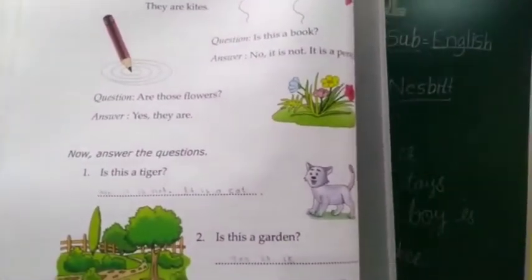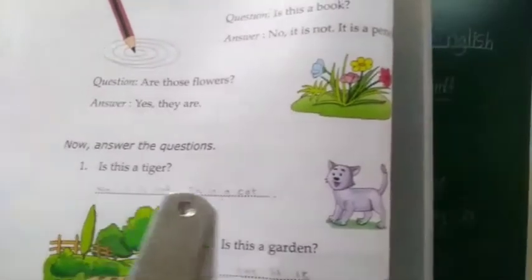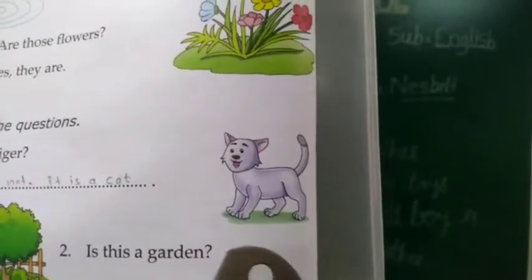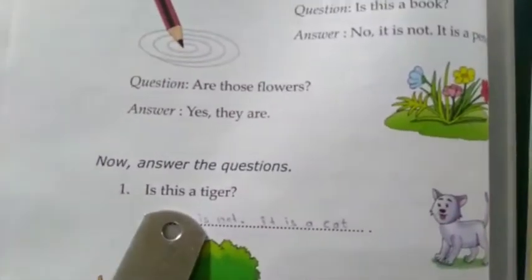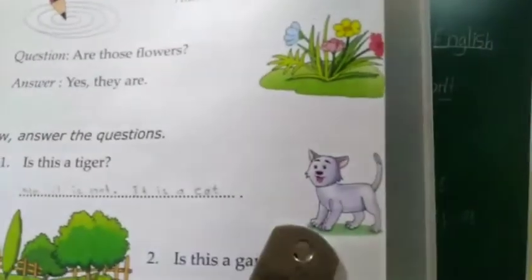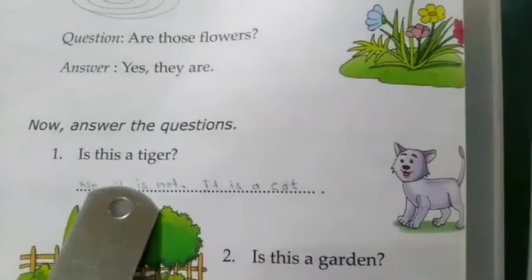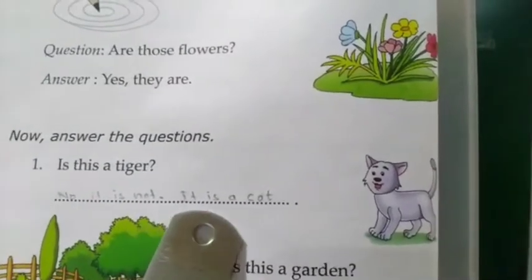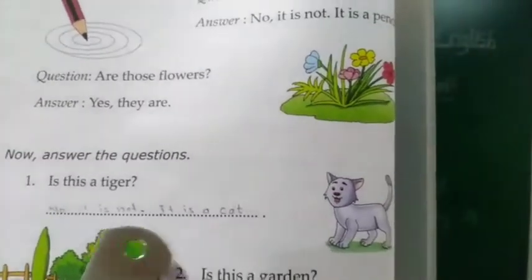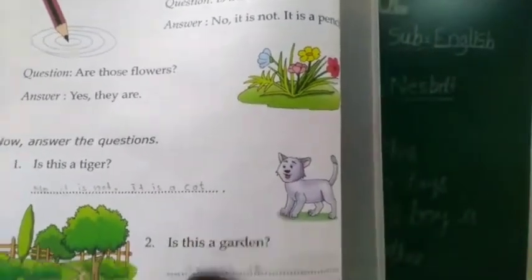Now we will give answers just like the examples. See this picture. Which is this picture, students? This is a cat. So, read this question first: Is this a tiger? Is this a tiger? Aapnele kaya bhi chalala hai — haan tiger ahi ka? So, our answer is: No, it is not. It is a cat. No, it is not — it is a cat.